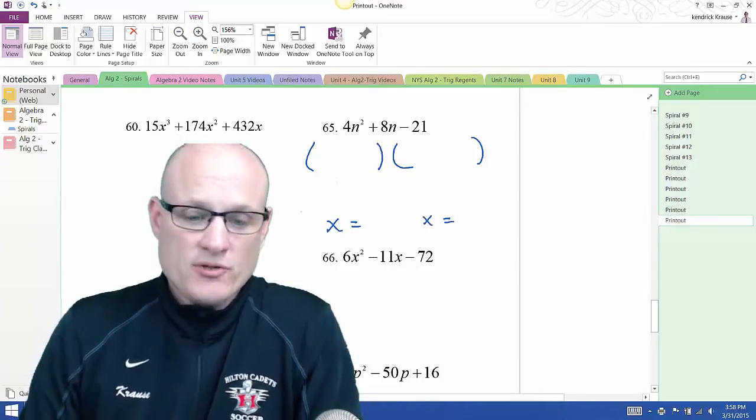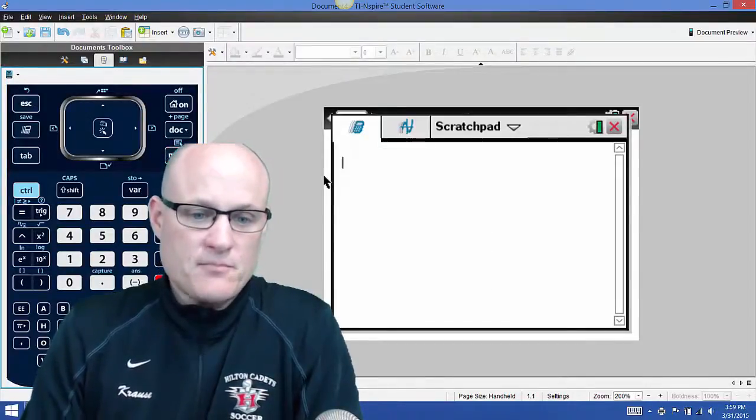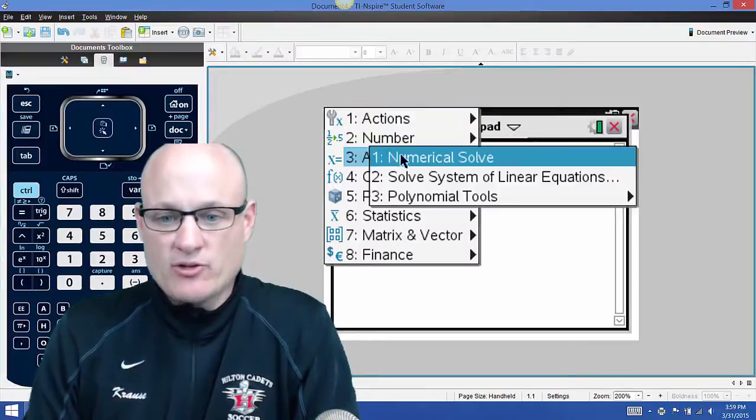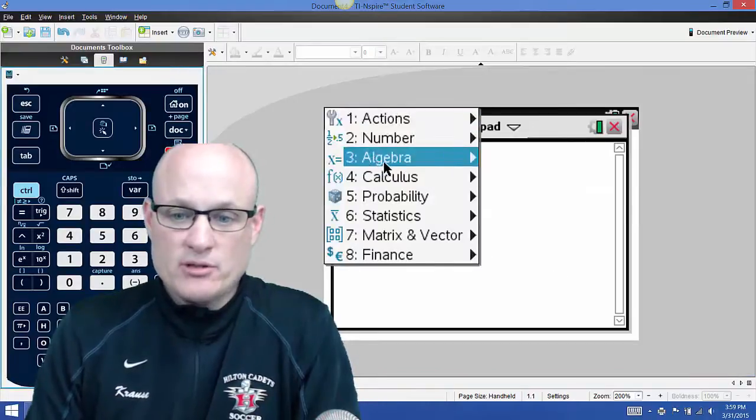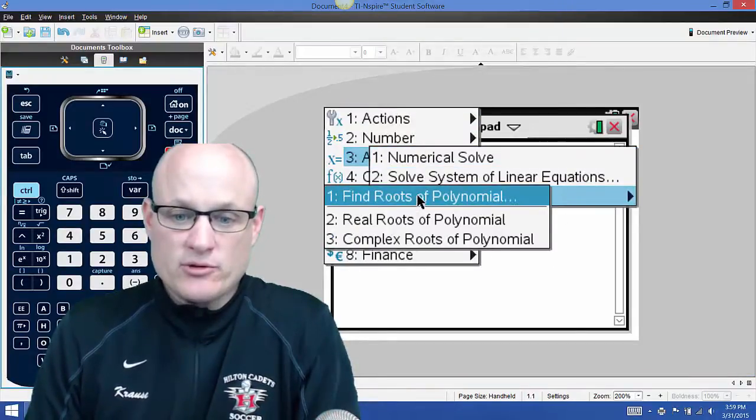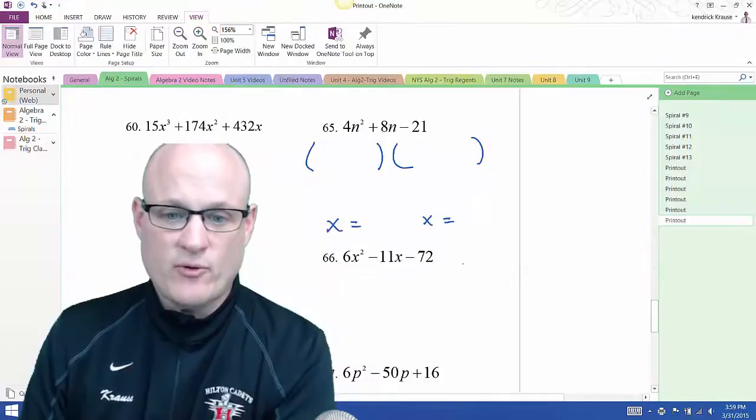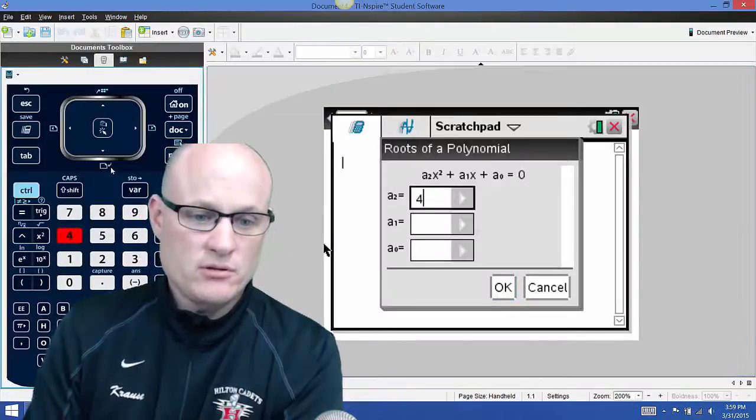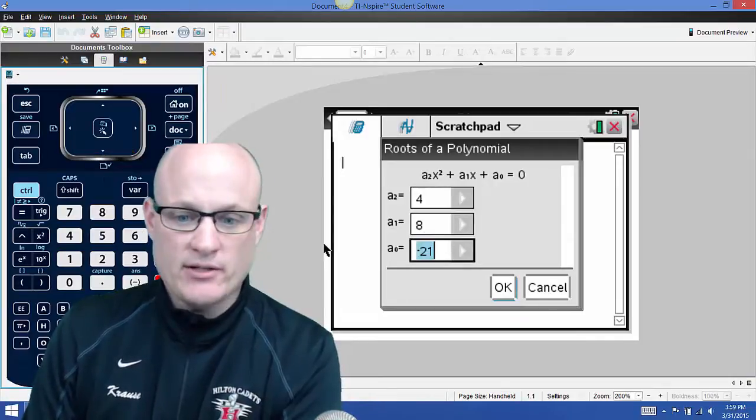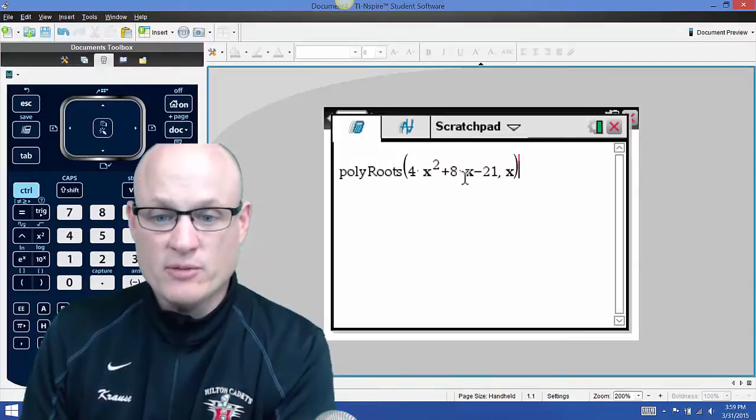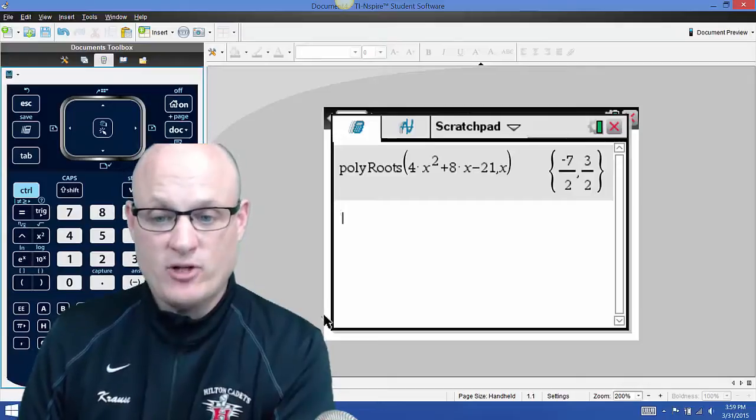I come over to my calculator and say, okay calculator, do this for me. Let's clear out of whatever is there. I go into menu, I go into algebra, I go into polytools and find roots of polynomials. Yes, it's a second degree. All I got to do is tell it the numbers: 4, 8, and negative 21. Hit enter or hit okay. Is this it? 4x² + 8x - 21? Yeah, that's it.